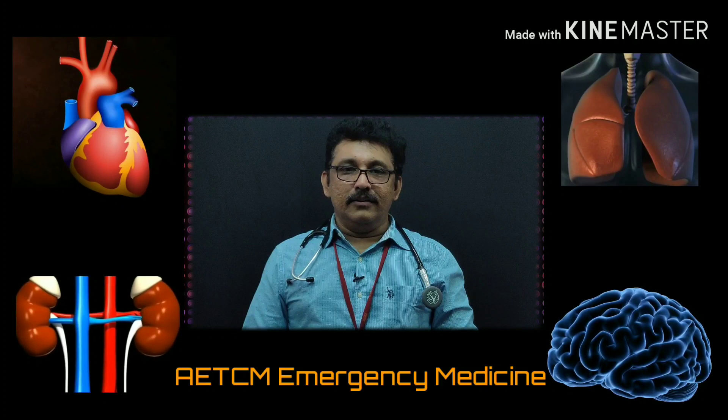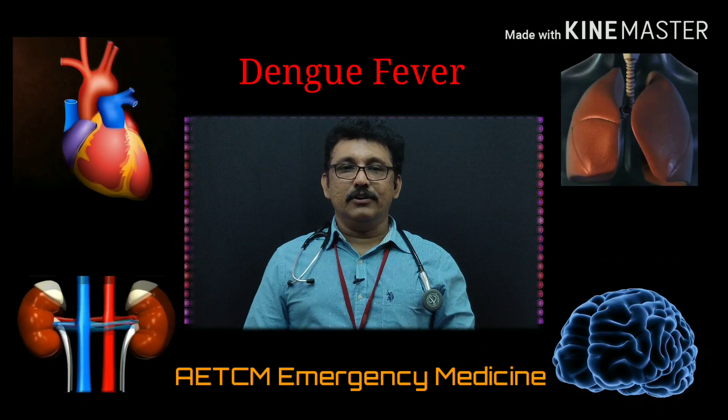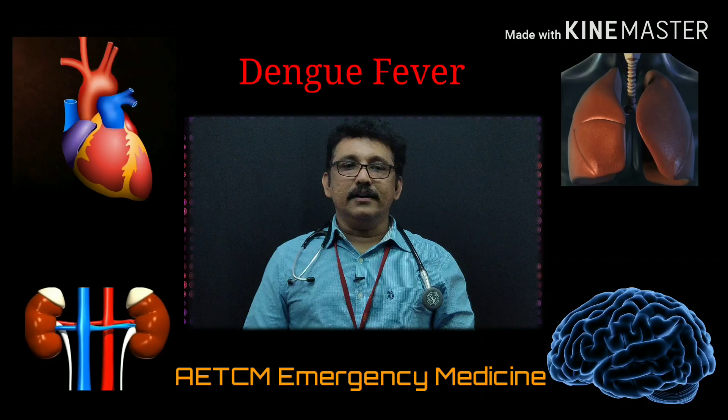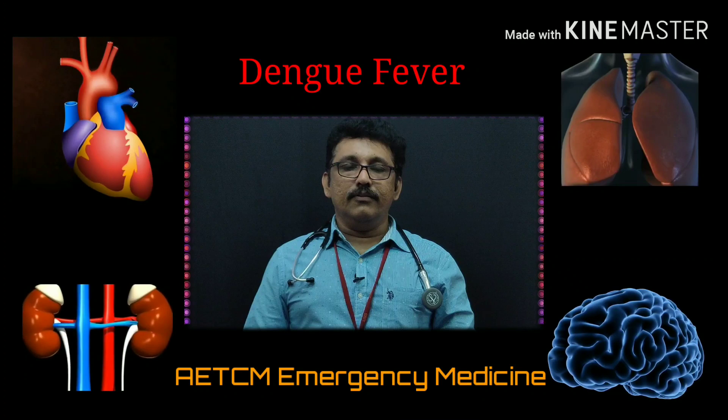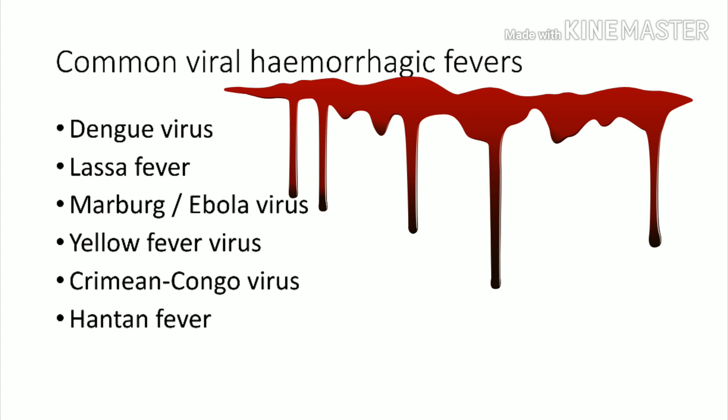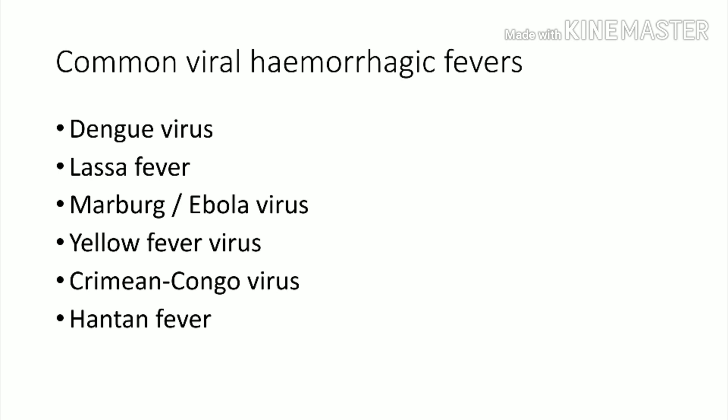Welcome to ATCM. Today we are going to discuss dengue fever, one of the commonest hemorrhagic fevers commonly seen in our country. We'll see what viral hemorrhagic fevers are present around the world. The commonest in India is dengue fever. Others include Lassa fever, Ebola virus fever, Yellow fever, Crimean Congo virus fever, and Hanta virus fever. All these are hemorrhagic fevers.